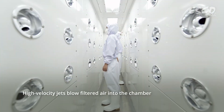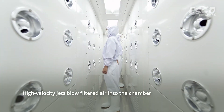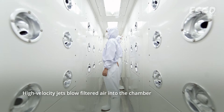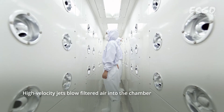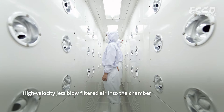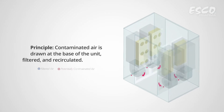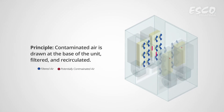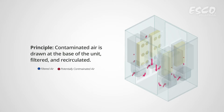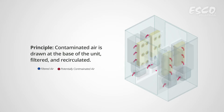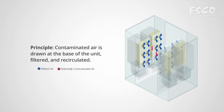The unit operates with high-velocity jets at the walls, blowing filtered air to the personnel and materials entering and exiting the chamber. The principle of the unit is that the contaminated air is drawn at the base of the unit, filtered, and supplied to the nozzles, then recirculated.